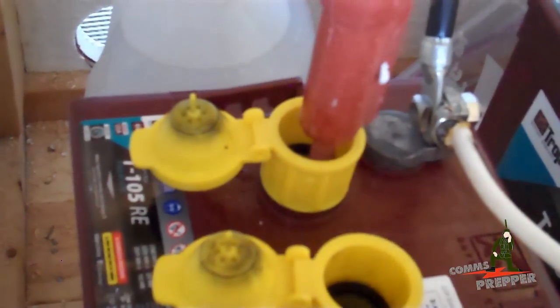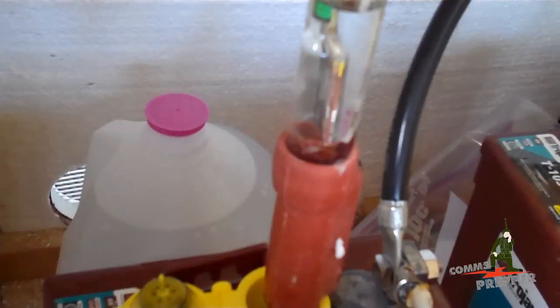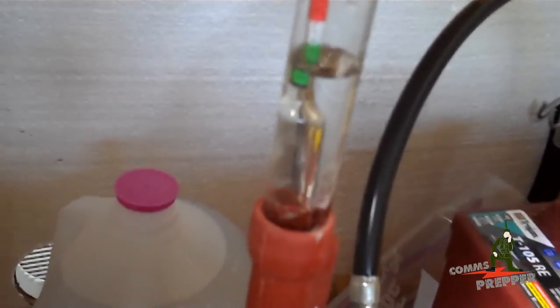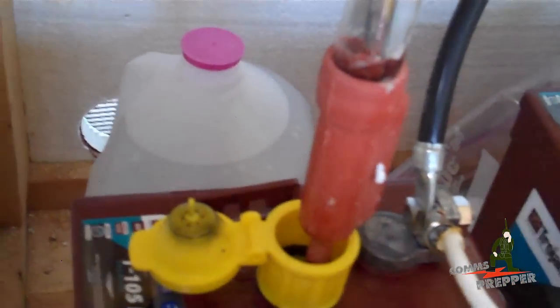What I do is I take a little sample of the electrolyte solution, suck it up into the hydrometer here and read where the water level falls on that scale in there, and I'll repeat this for all 12 cells.